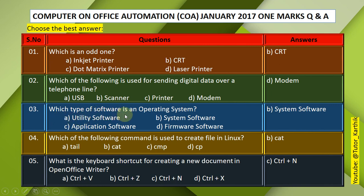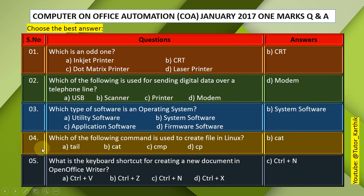Question 3: Which type of software is an operating system? A. Utility software, B. System software, C. Application software, D. Firmware software. The answer is B — System software.